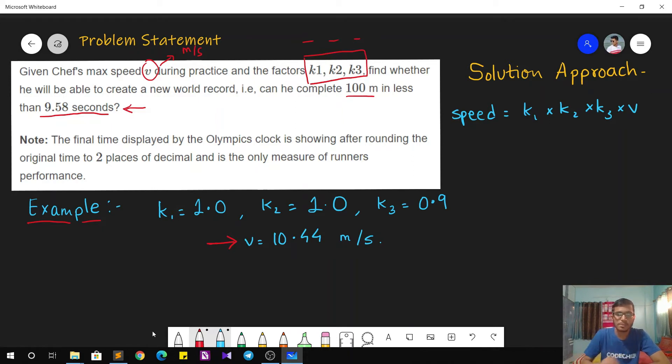So once we have this speed, then we need to find the time taken. Time taken to complete 100 meters race can be easily calculated by 100 divided by the speed that we have calculated and that will give us the time in seconds.